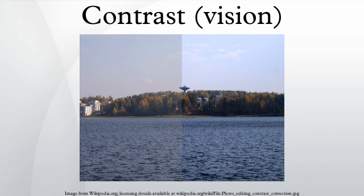RMS contrast (root mean square contrast) does not depend on the spatial frequency content or the spatial distribution of contrast in the image. RMS contrast is defined as the standard deviation of the pixel intensities, where intensities represent each element of the two-dimensional image and the average intensity of all pixel values in the image is used. The image is assumed to have its pixel intensities normalized in the range zero to one.